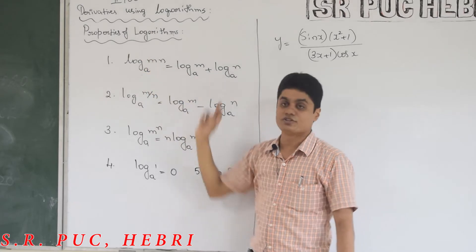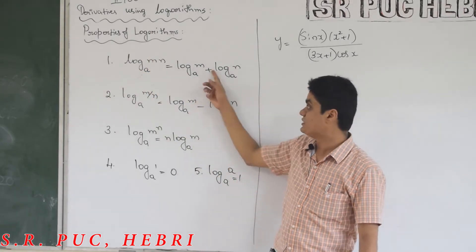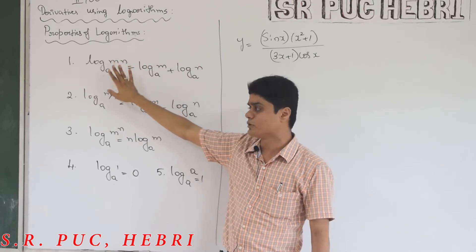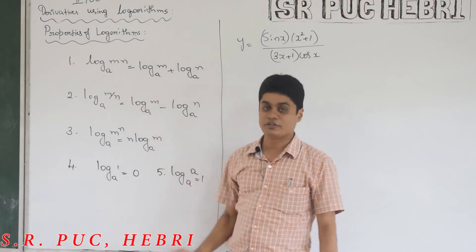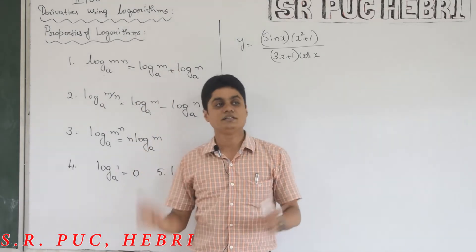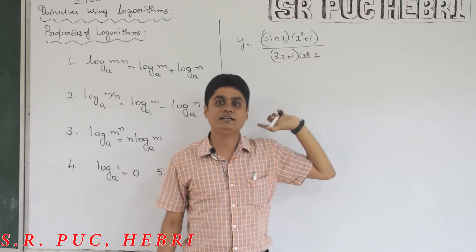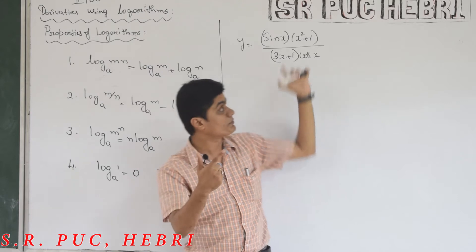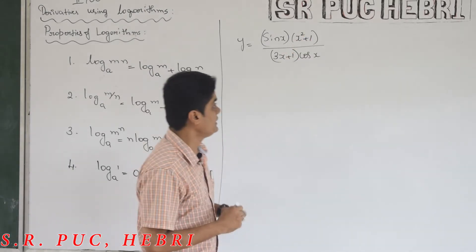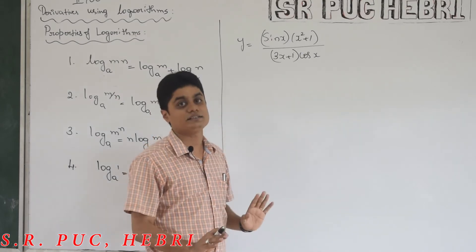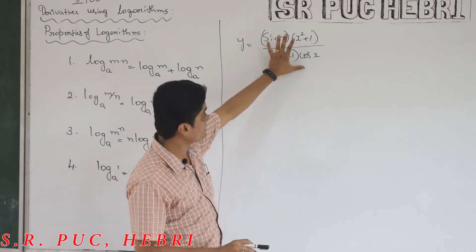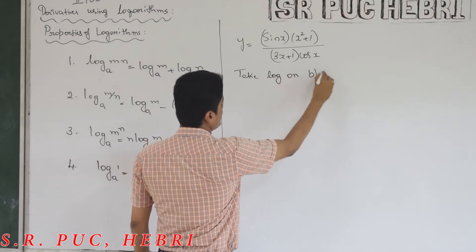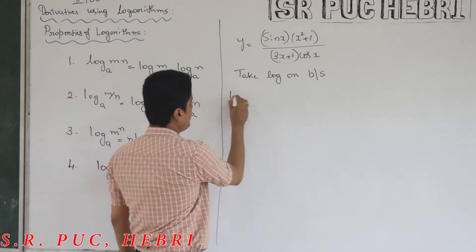When you compare product and addition, product is the difficult part and addition is the easy part. So multiplication here becomes addition there. First you should take log on both sides. In calculus, if the base is not written, it will be considered as e. Log of sin(x)·(x²+1) / (3x+1)·cos(x).